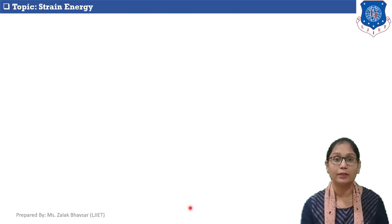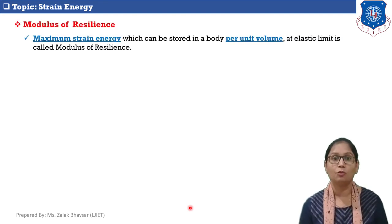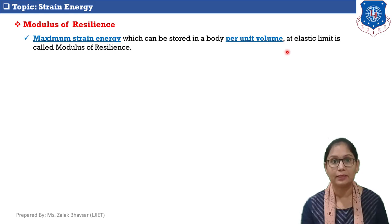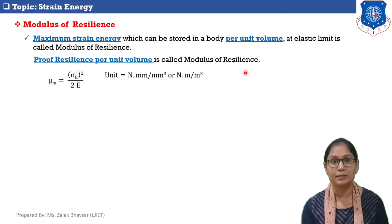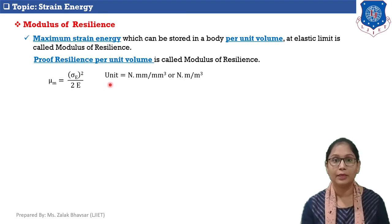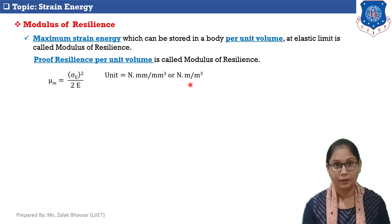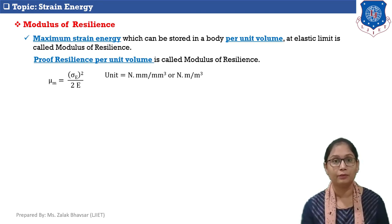The maximum strain energy which can be stored in a body per unit volume at the elastic limit is called modulus of resilience. In other words, proof resilience per unit volume is called modulus of resilience. It is denoted by mu_m, and the equation is sigma_e squared upon 2E. The unit of modulus of resilience is Newton·mm per mm³ or Newton·meter per m³.